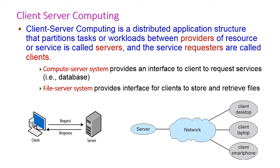The next type is client-server computing. Client-server computing is a distributed application structure where the entire workload is partitioned between providers and requesters. The providers are called servers and the requesters are called clients. There are two types of server systems: the first is a compute server system, and the second is a file server system.